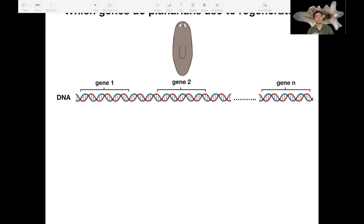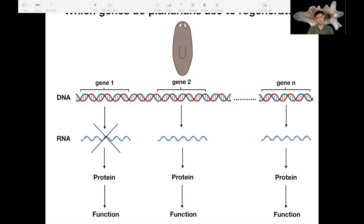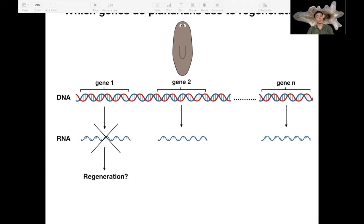We can't physically remove each gene from every single cell of a planarian, but we can use a technique called RNAi, or RNA interference. Genes exist as DNA; when switched on, they make copies of RNA, which eventually become proteins that carry out functions giving us a phenotype — for example, whether planarians can regenerate. Using RNAi, you can specifically inhibit the RNA of a particular gene, stopping production of its protein. Then you can ask: is that gene required for regeneration?